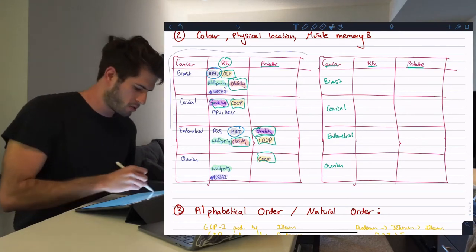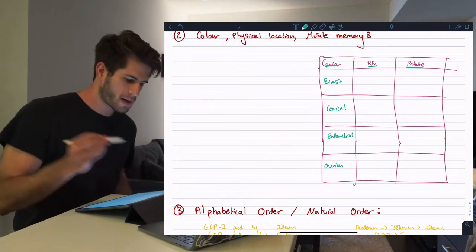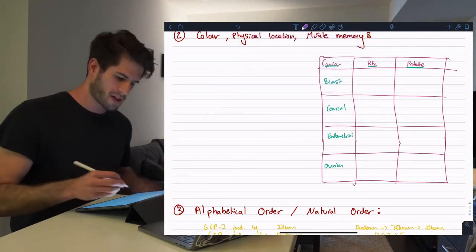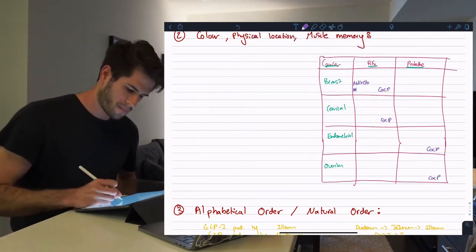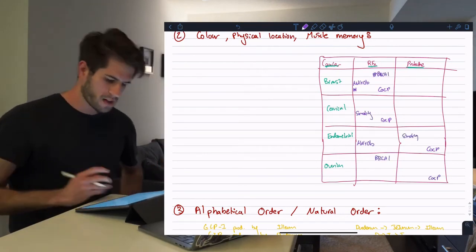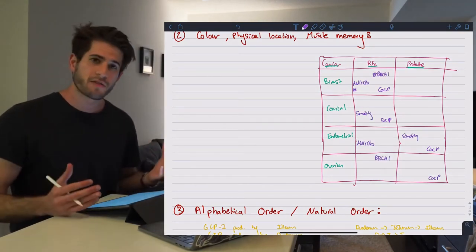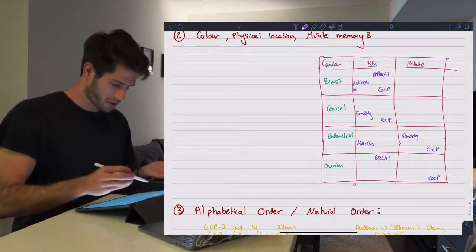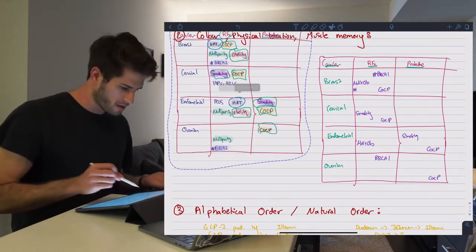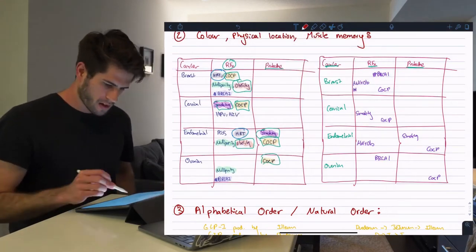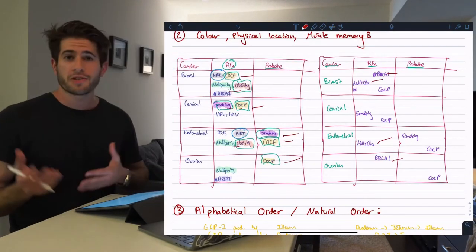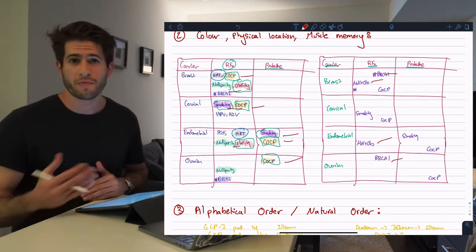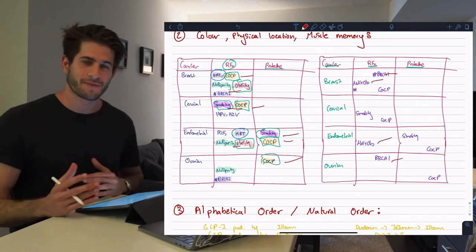I'm going to cut this table and attempt to redraw all those different factors to give it a test. A month after the original exam, I managed to remember a bunch of these factors and where they're placed — actually not that bad. So it means that this was a good way to memorize it.